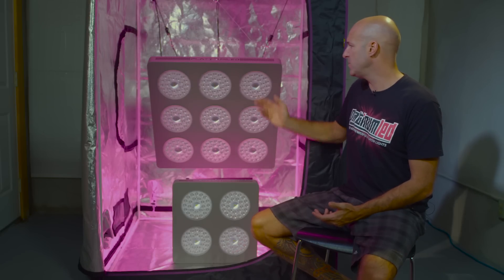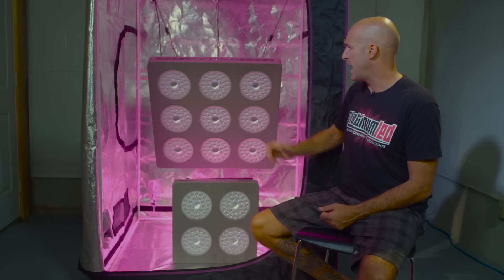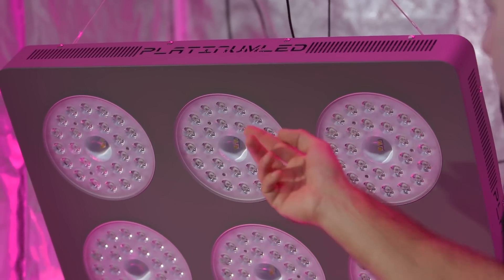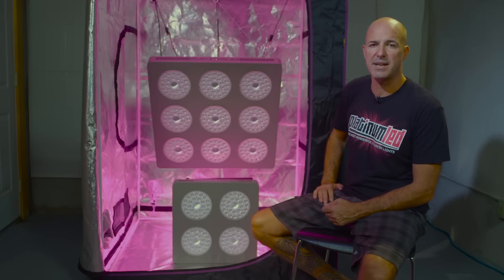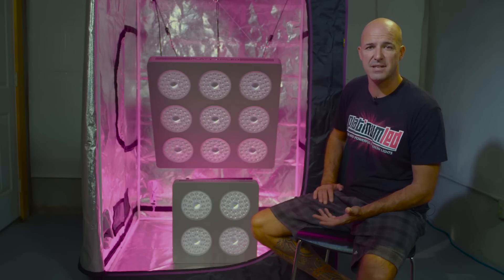As you can see, we use the existing 12-band spectrum in each one of the clusters. We have the bloom on separate clusters and the veg on separate clusters. In the middle of each one of these clusters, there are two 10-watt XML2 Cree chips. This is running independently of the rest of them, giving you that added flexibility.